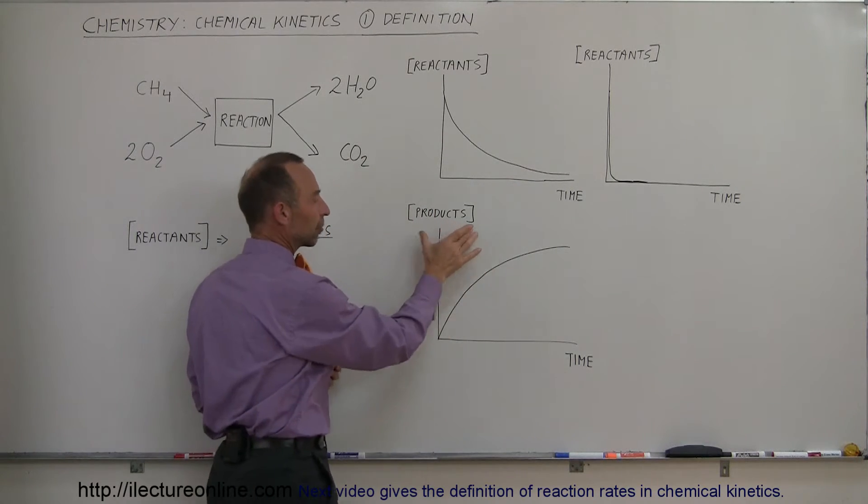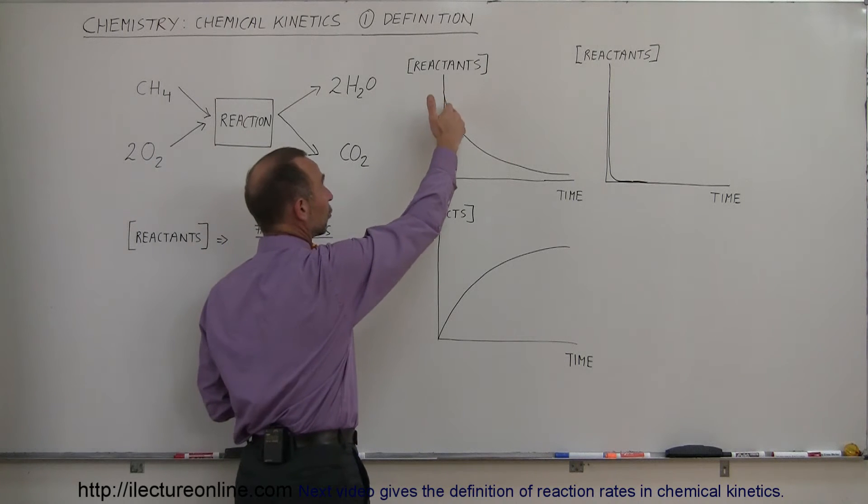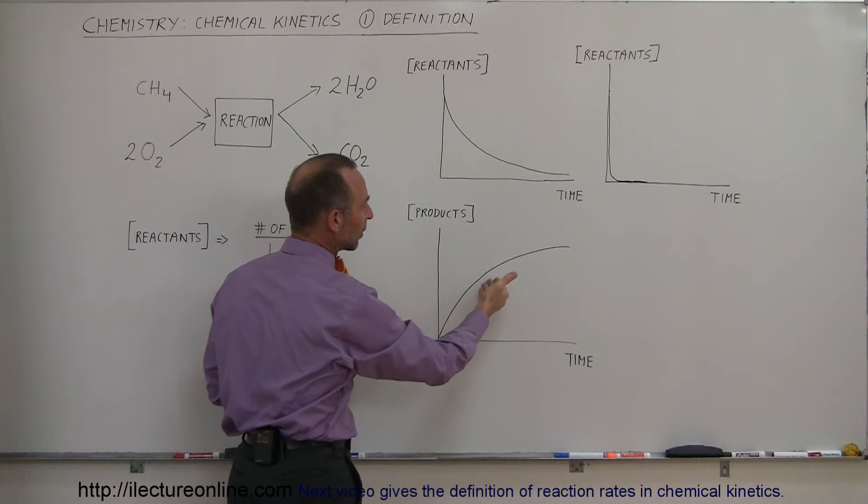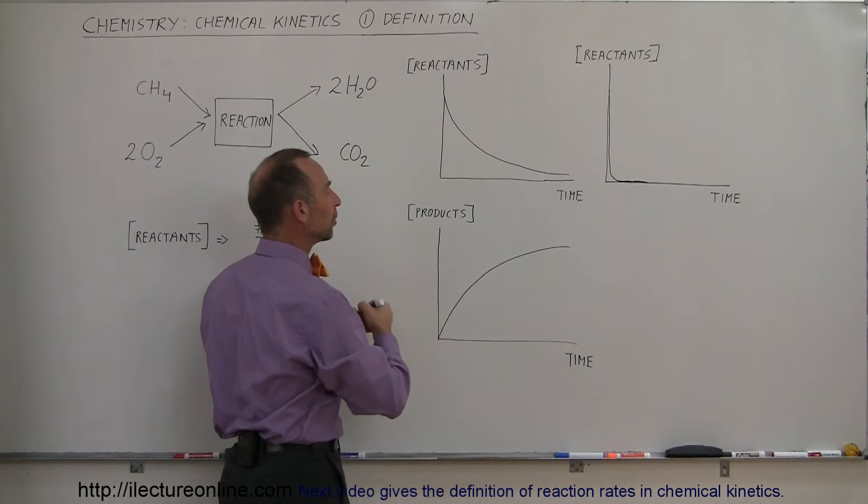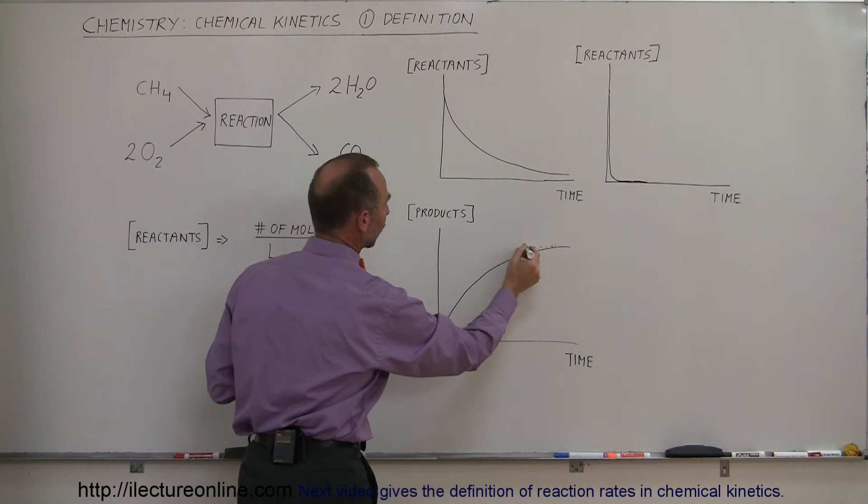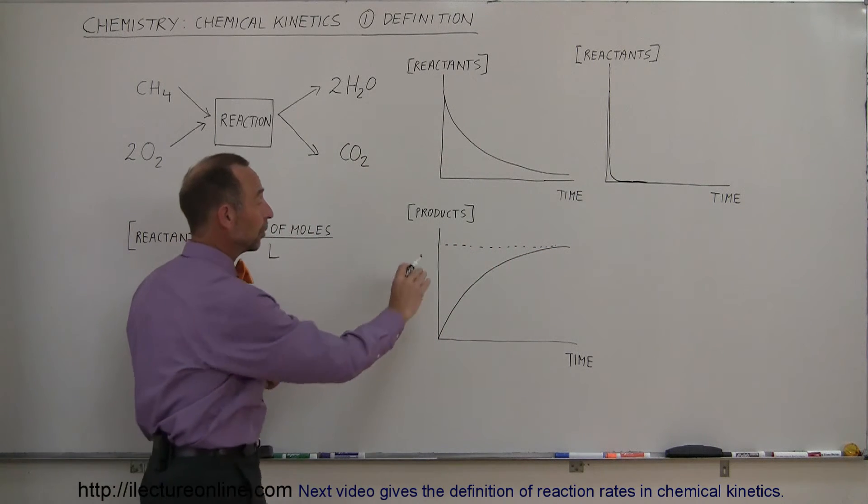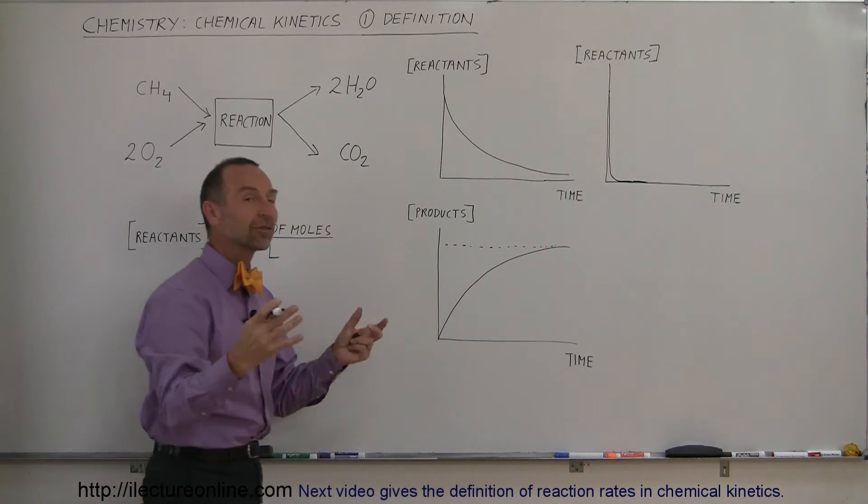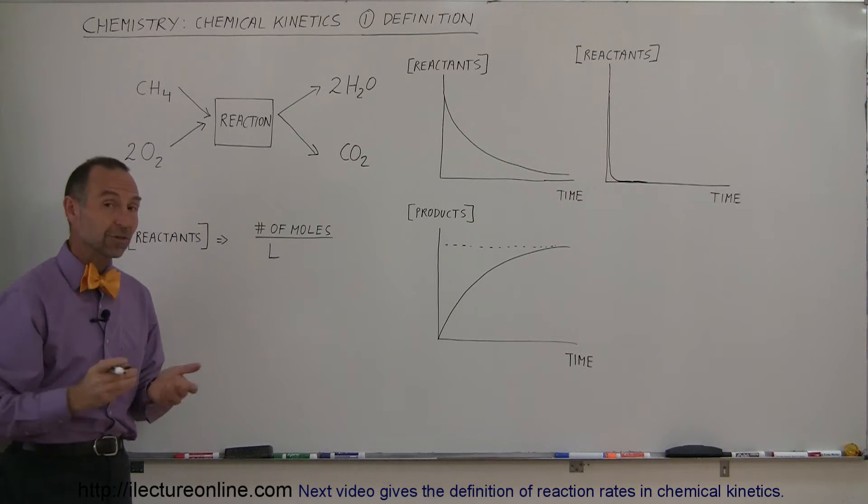And then here we have a graph of the products versus time. At the very same time as more and more reactants are consumed, more and more products are produced. The number of products continue to increase until we reach the full amount of all the products that will be produced by this reaction. Once you run out of reactants, you will not form any more products. Eventually when the reaction completes, you will have all the products that you wanted when you start out with a certain number of reactants.